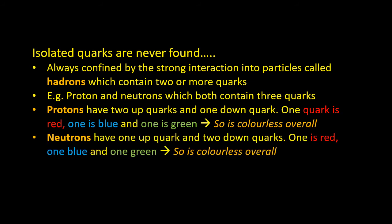Neutrons have one up quark and two down quarks. Again, one is red, one is blue and one is green. So the neutron is colourless overall as well.